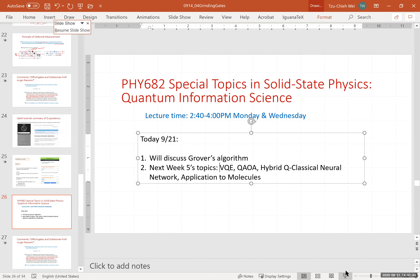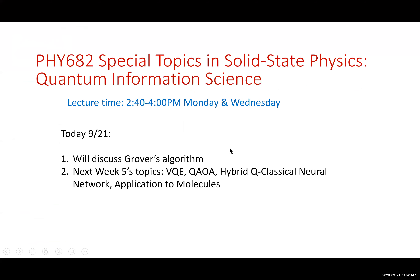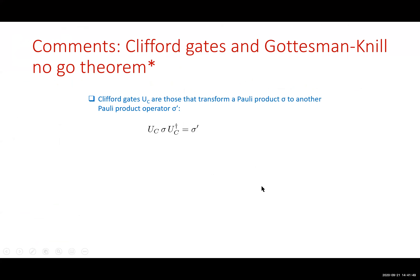So let me use the slideshow. There's one thing I did not have time to go over last time, which is the so-called Gottesman-Knill no-go theorem. This talks about Clifford Gates. The idea is simple: you have any unitary that transforms a Pauli product to another Pauli product — this is in the class of Clifford Gates, and these form a group, also called the Clifford group.